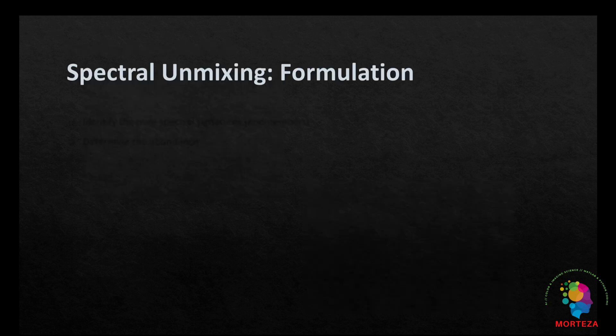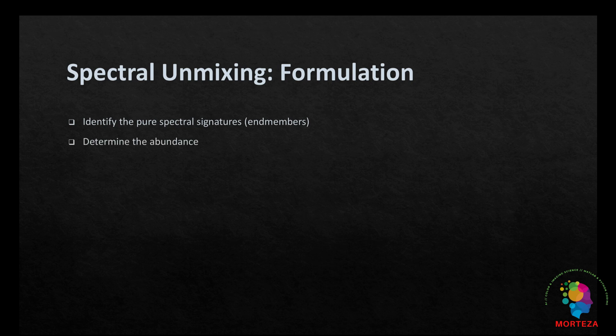Spectral unmixing assumes that the observed spectrum at each pixel is a linear or sometimes non-linear mixture of several endmember spectra. The goal is to identify the pure spectral signatures or endmembers of materials in the scene and then determine the abundance of each endmember in every pixel.